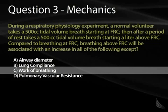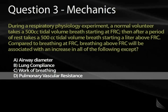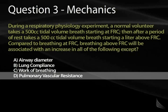Answer C is work of breathing — as we go to higher and higher lung volumes, work of breathing is actually going to increase. As for pulmonary vascular resistance: at higher lung volumes, as we distend more alveoli, some capillaries are going to collapse, creating more West Zone 1 lung. So airway diameter, work of breathing, and pulmonary vascular resistance all increase at higher lung volumes. Lung compliance, however, decreases — the correct answer is B.